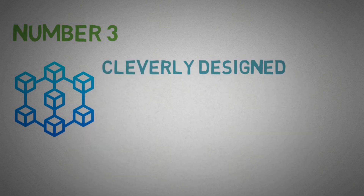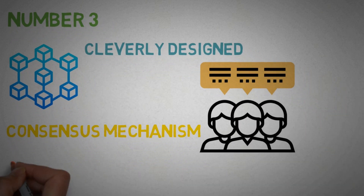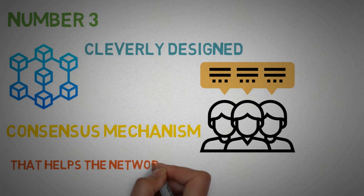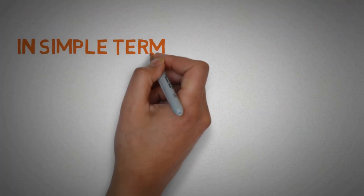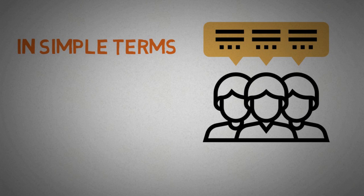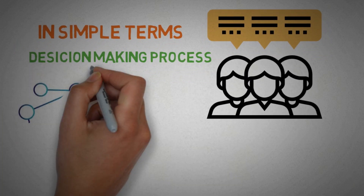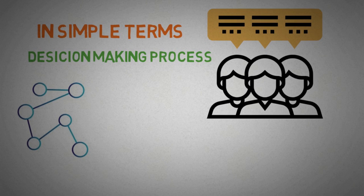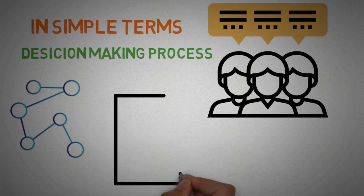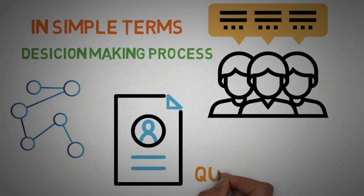Number three: blockchains are cleverly designed and equipped with consensus mechanisms that help the network make decisions quickly. In simple terms, a consensus mechanism is a decision-making process for the group of nodes active on the network — it helps nodes reach an agreement quickly.